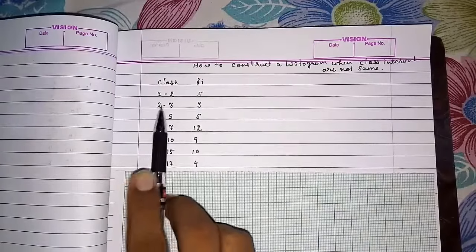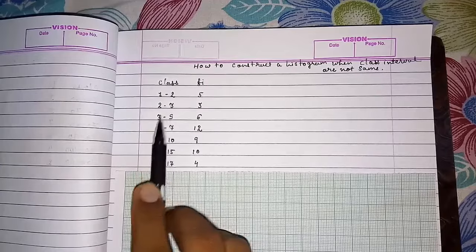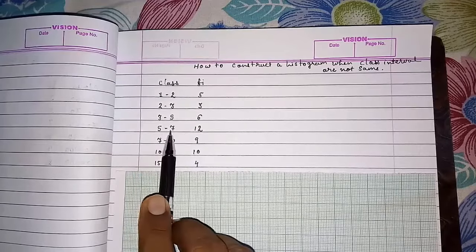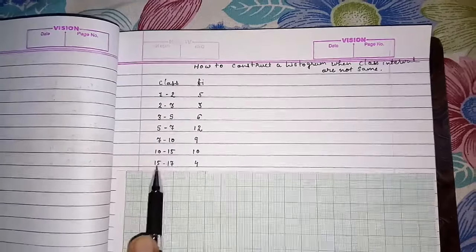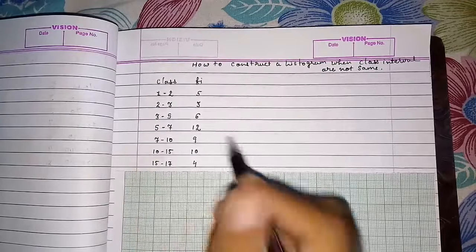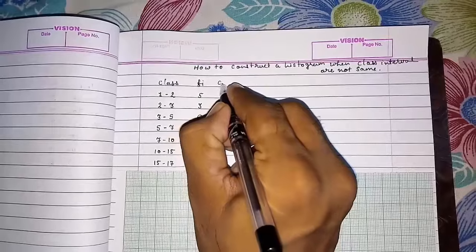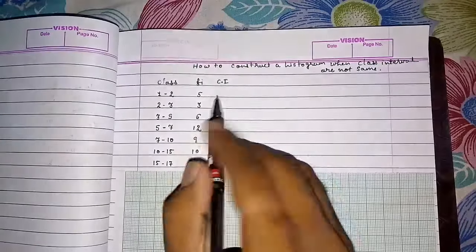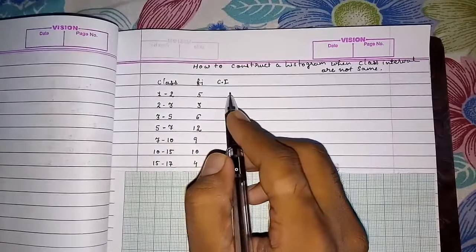You can see here the class intervals: 1 to 2, 2 to 3, 3 to 5, 5 to 7, 7 to 10, 10 to 15, 15 to 17. So all class intervals are different. I am writing here so that you can see. It is called class interval or you can call it class width also.